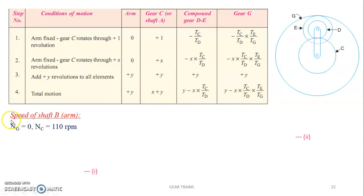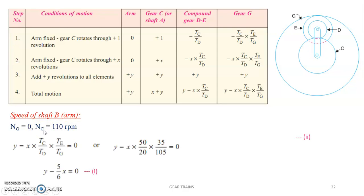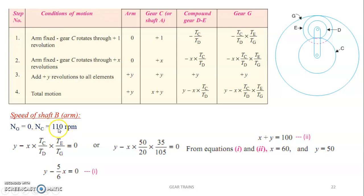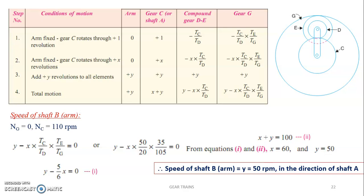Since gear G is fixed, N_G = 0. Shaft A rotates at 110 RPM, and since gear C is on shaft A, N_C = 110. Substituting N_G = 0 into the expression gives equation 1, and N_C = X + Y = 110 gives equation 2. Solving equations 1 and 2 gives X and Y. The speed of shaft B equals the speed of the arm, which is Y = 50 RPM in the same direction as shaft A, i.e., clockwise.